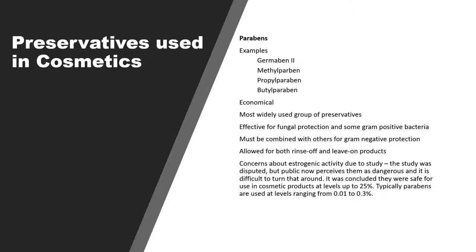The very first example belongs to the category of parabens — methyl parabens, propyl parabens, butyl parabens. They are vastly used in cosmetics because they are very economical and are the most widely used group of preservatives. They are effective against fungal protection and some gram-positive bacteria too. They are sometimes combined with other forms to provide both gram-positive and gram-negative protection. They are allowed for both rinse-off and leave-on products, for example lotions, shampoos, etc.